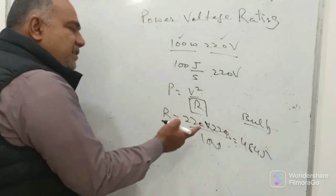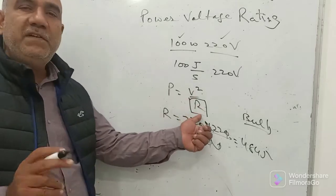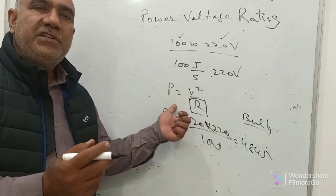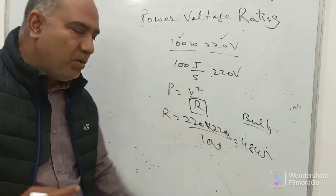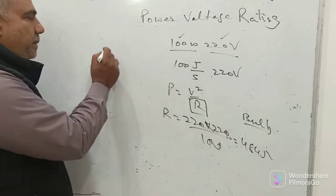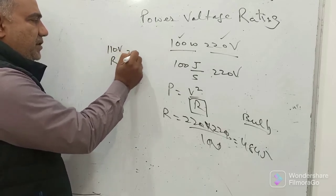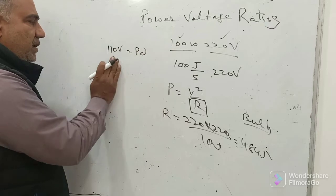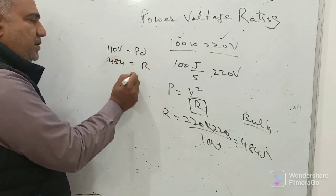Now resistance, whether you supply less voltage or more voltage, that resistance will not change, but power will definitely change. The same bulb is having resistance of 484 ohms. Now if you give it say 110 volt, you supply potential difference of 110 volt, and resistance is 484 ohms.